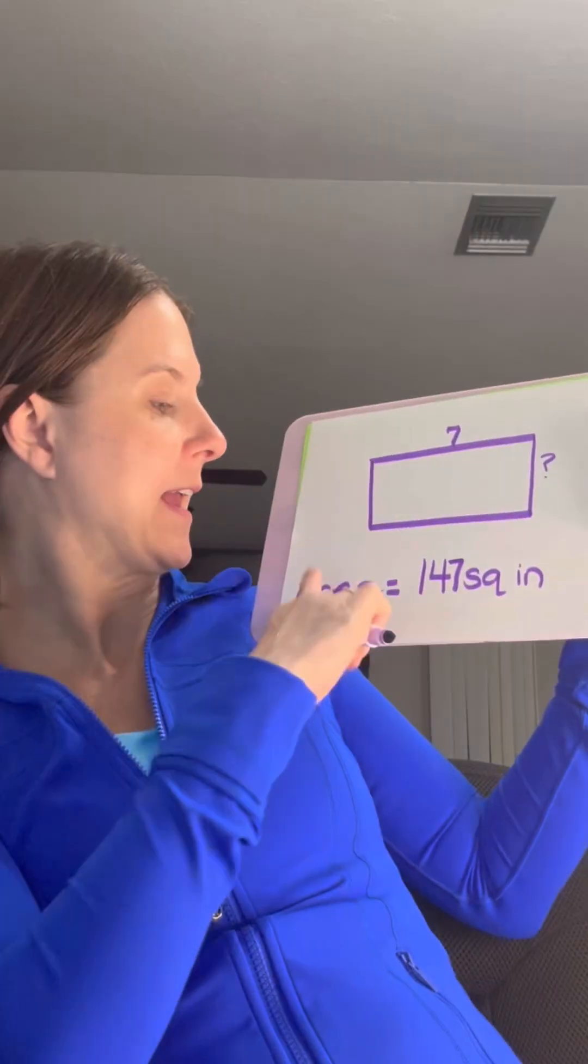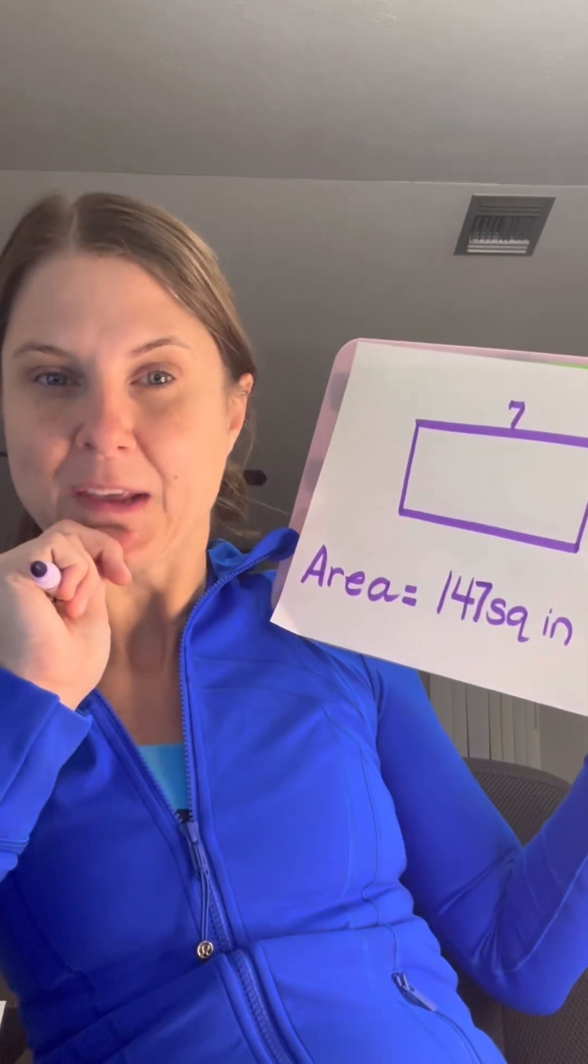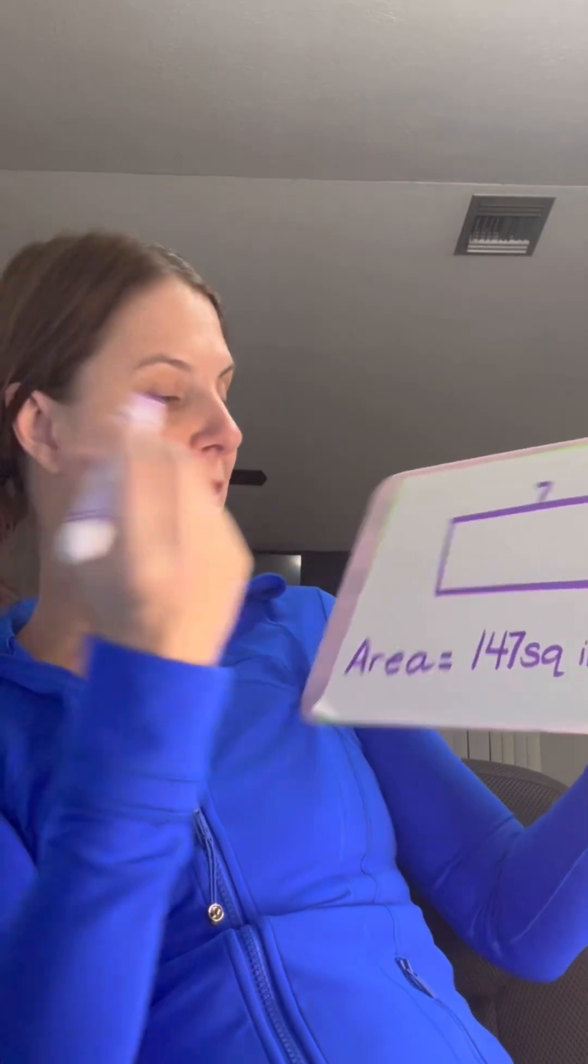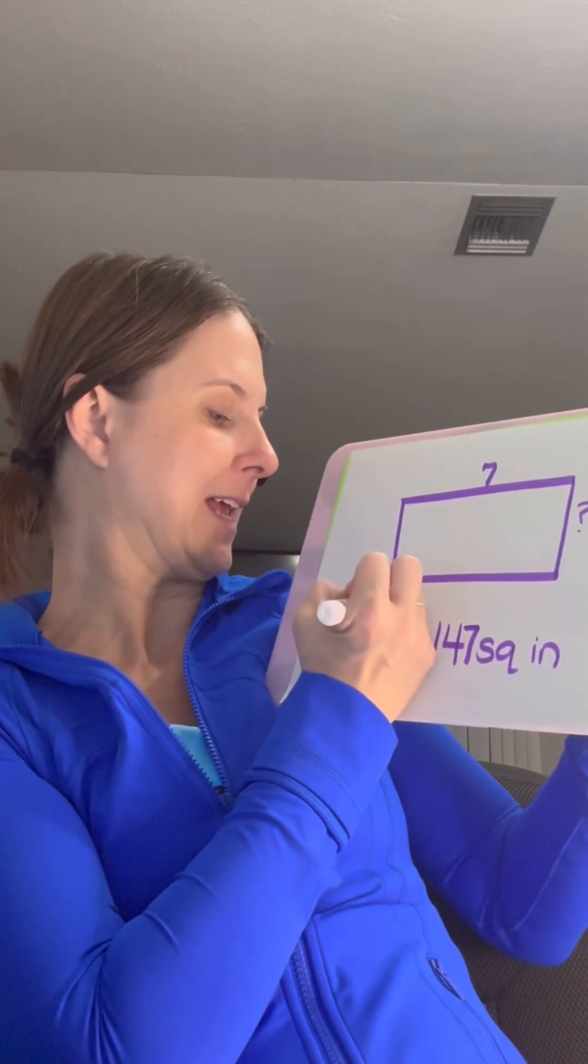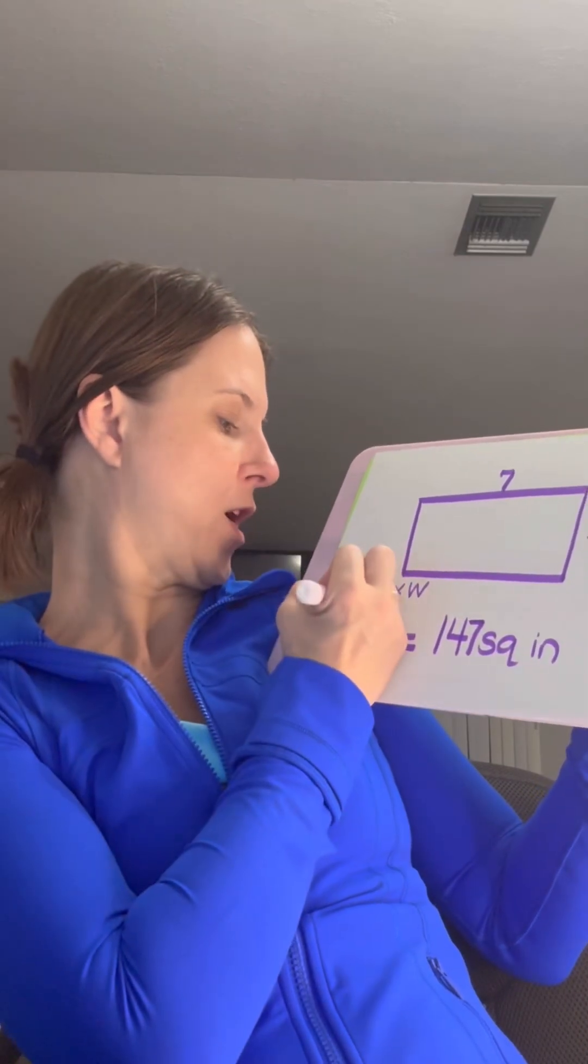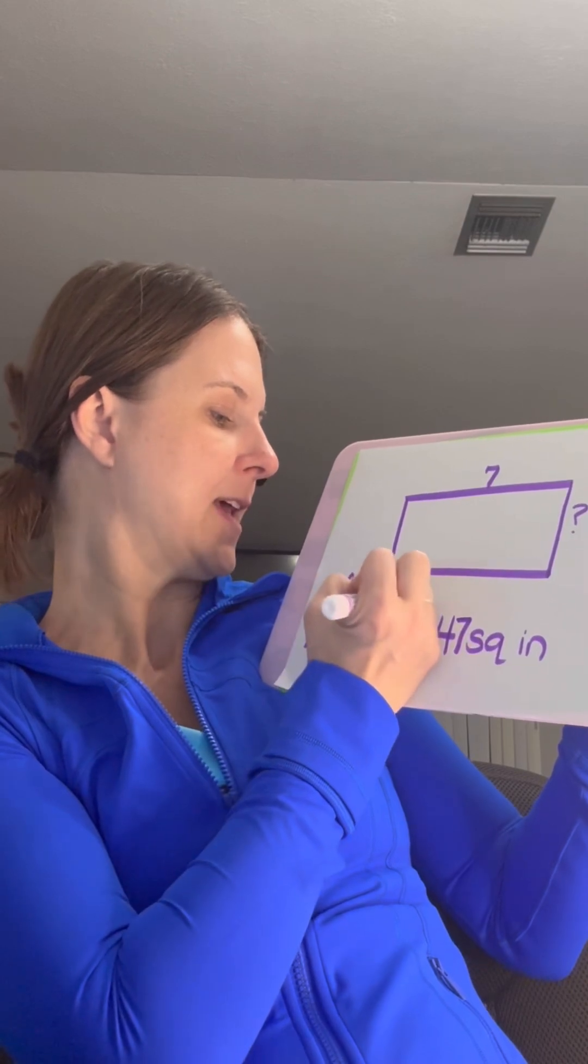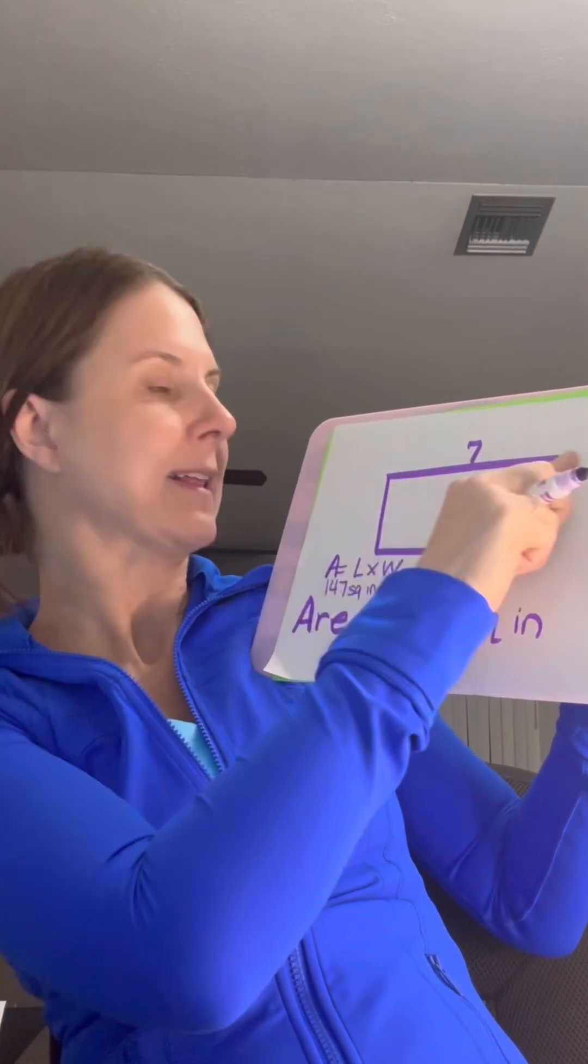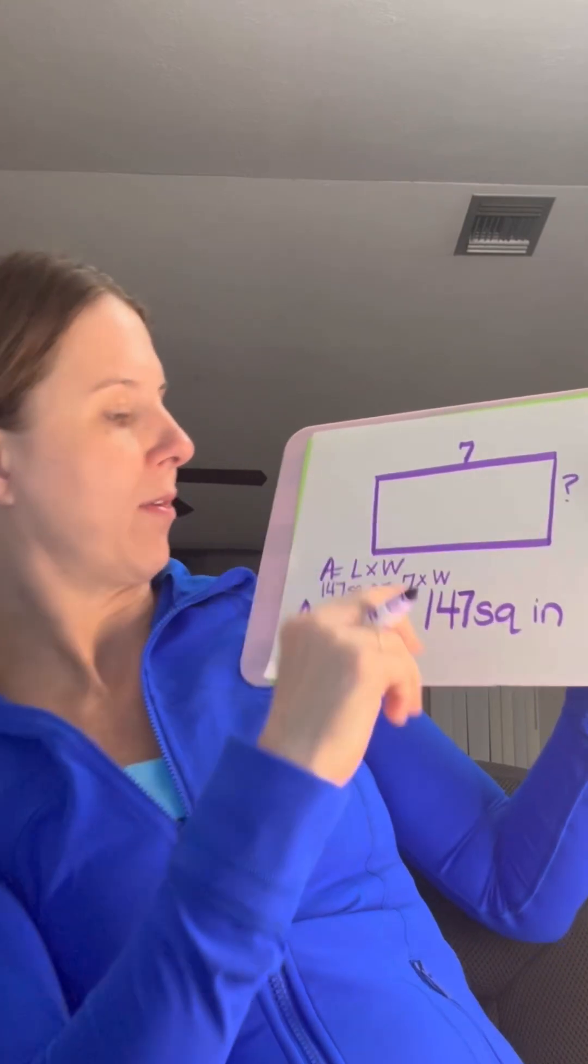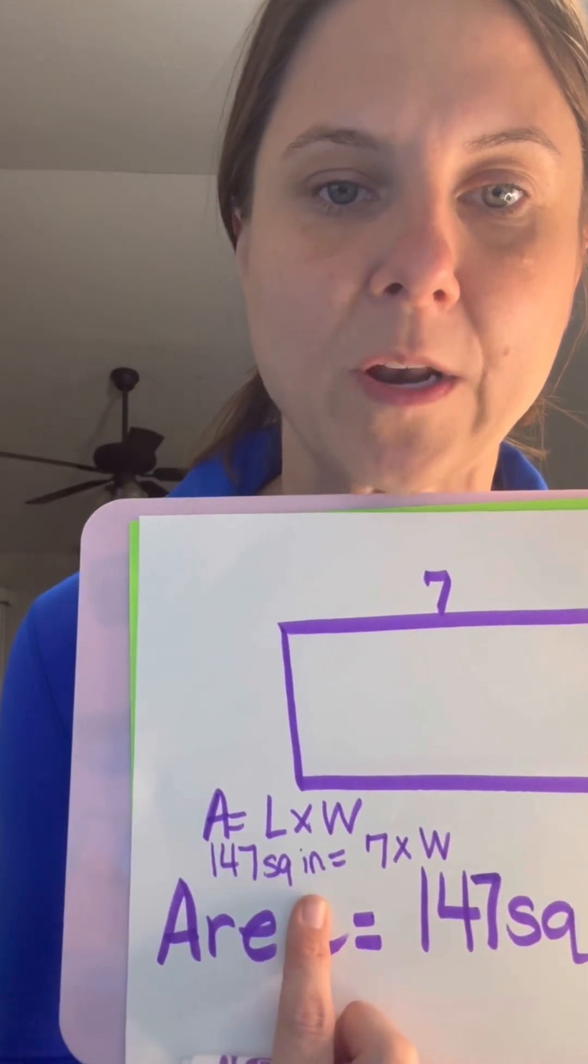Looking at it, it gives us the area so we're finding the missing side. What are my steps? You could write the formula down: Area equals length times width. The area is 147 square inches equals, they give us the length, right? But we do not know the width. So it's seven times W equals 147.